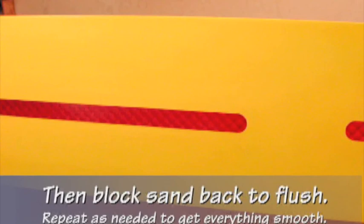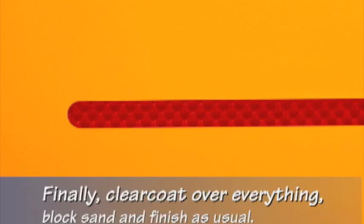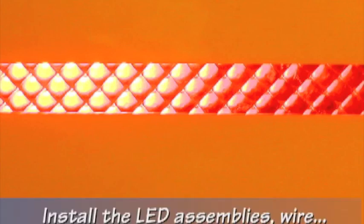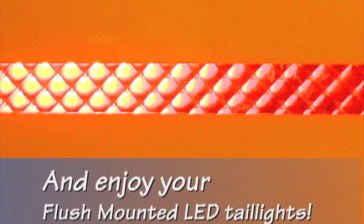Then block sand back to flush. Repeat as needed to get everything smooth. Finally, clear coat over everything. Block sand and finish as usual. Install the LED assemblies, wire, and enjoy your flush-mounted LED taillights.